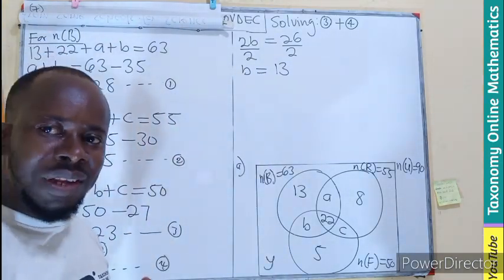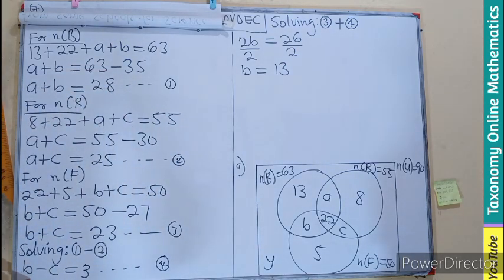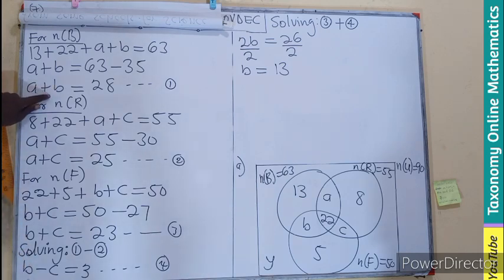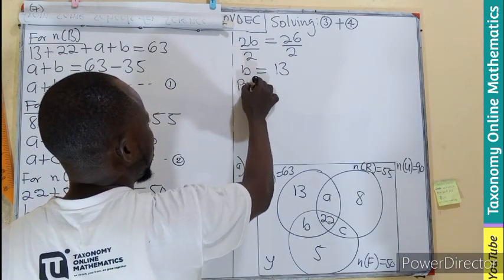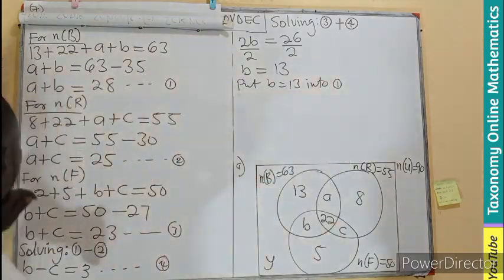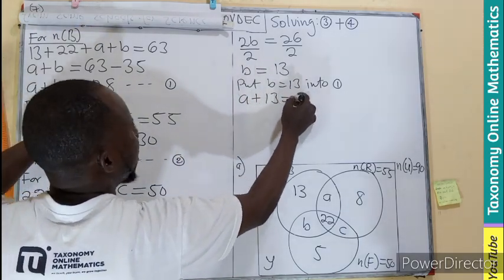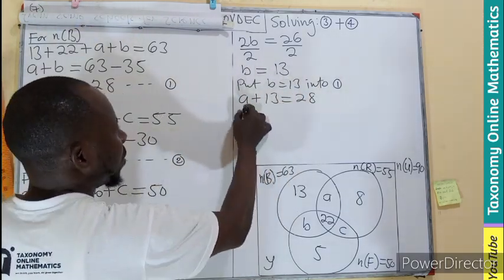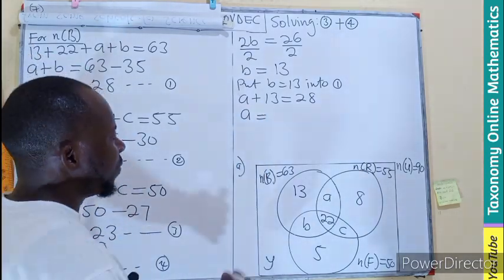Knowing B, we can find A and C. Come back to equation one: A plus B equals 28, with B equals 13. So A equals 28 minus 13, which gives us 15.